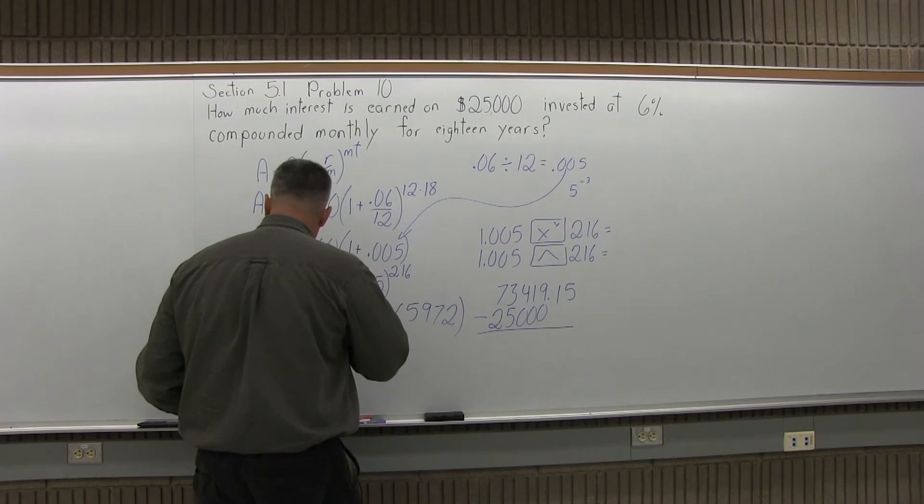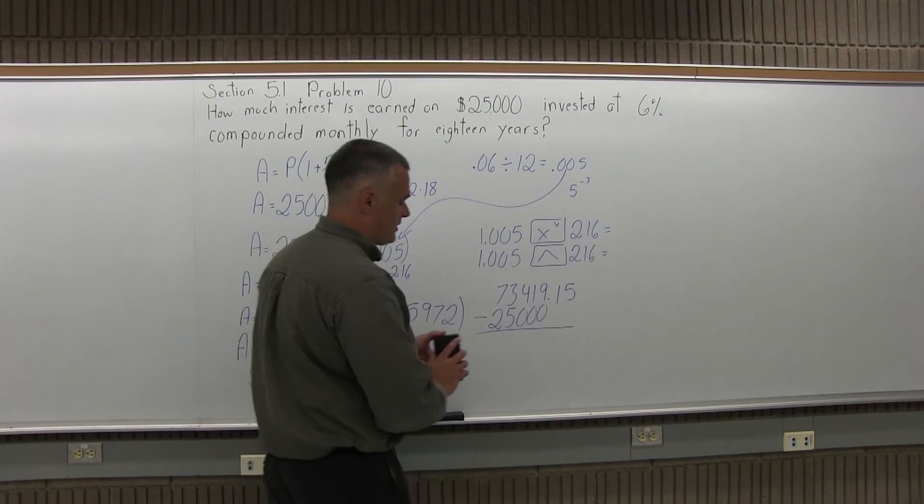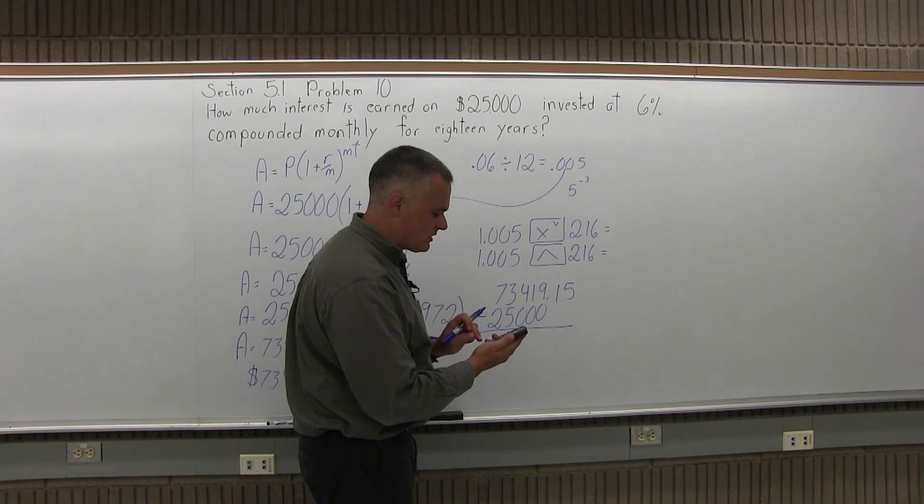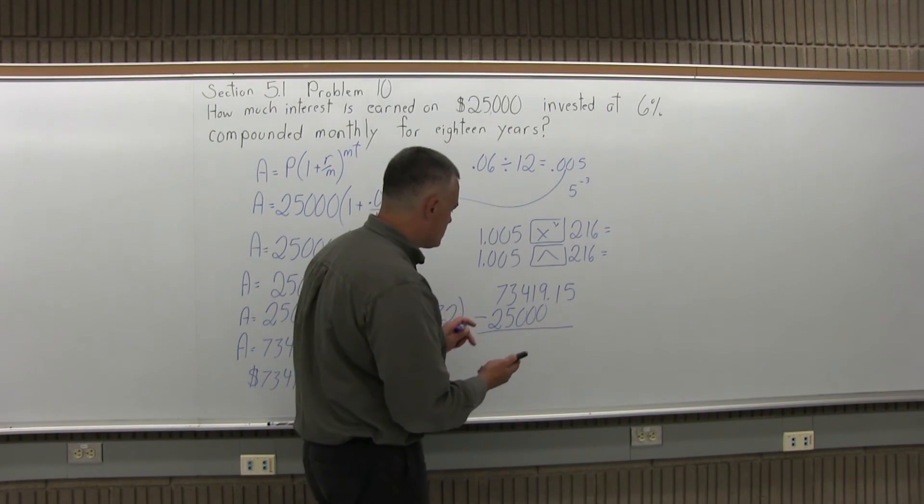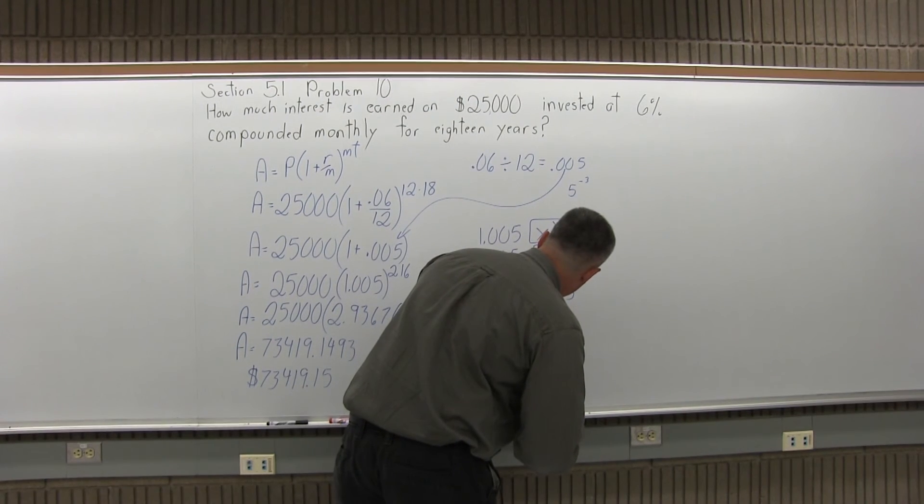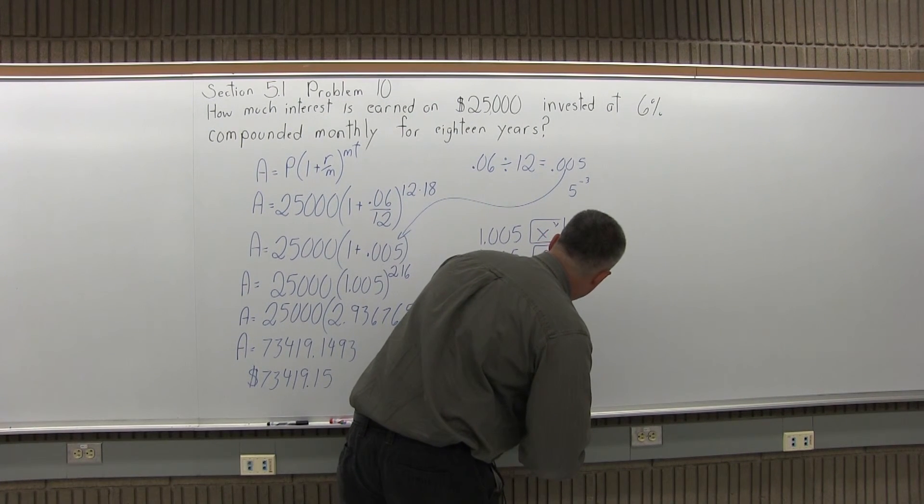So that should be $48,000, but since the $73,419 is on my calculator, let me just make absolutely sure. So minus $25,000 is, yeah sure enough, it is what I expected, $48,419.15.